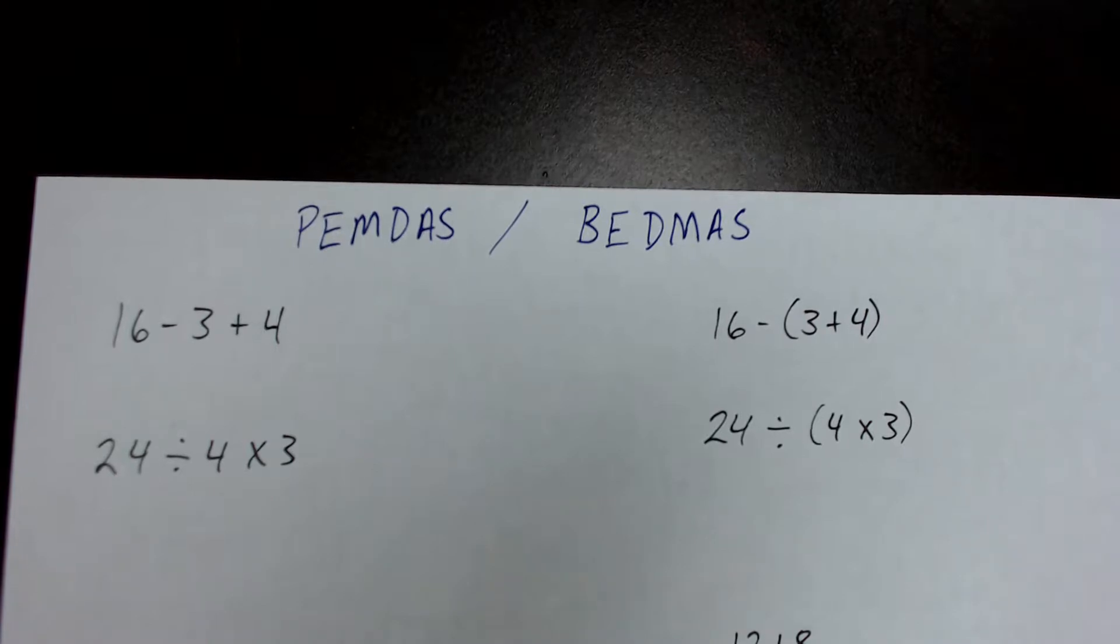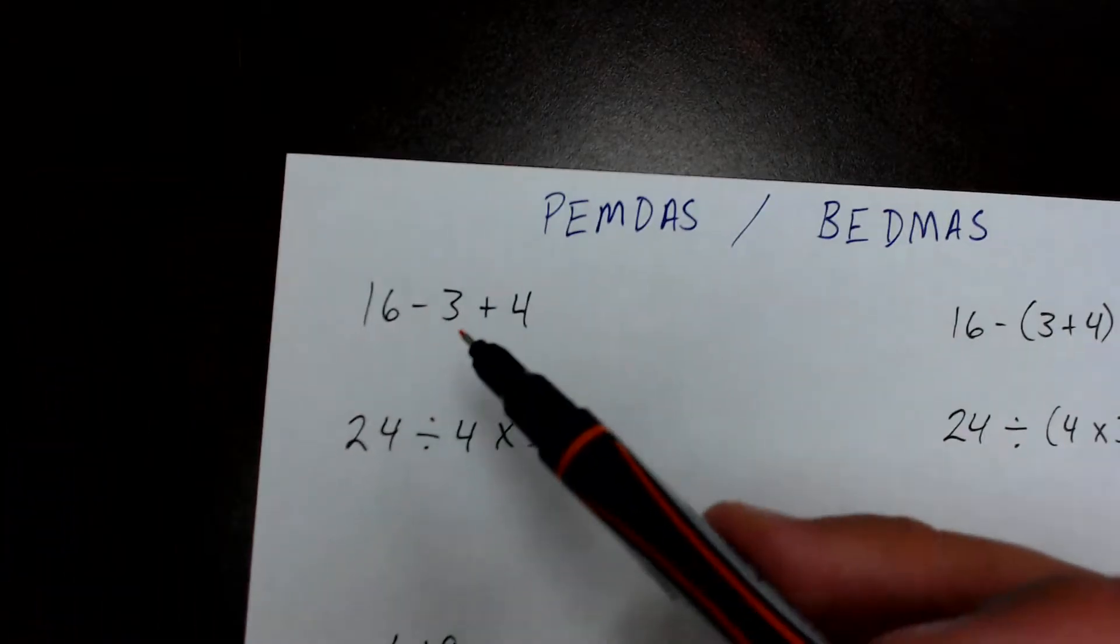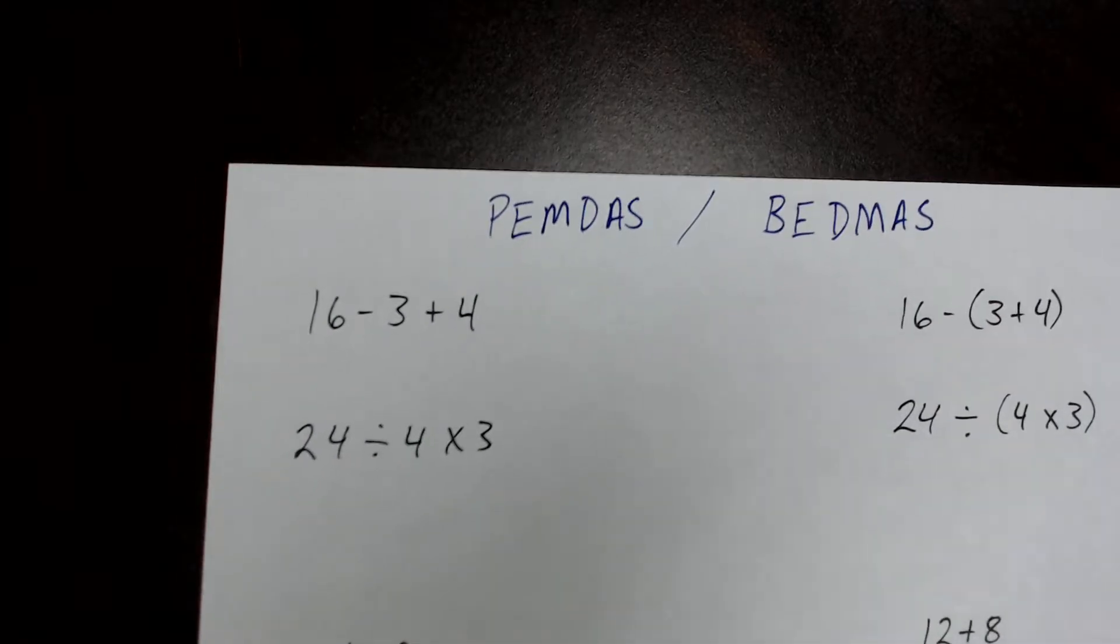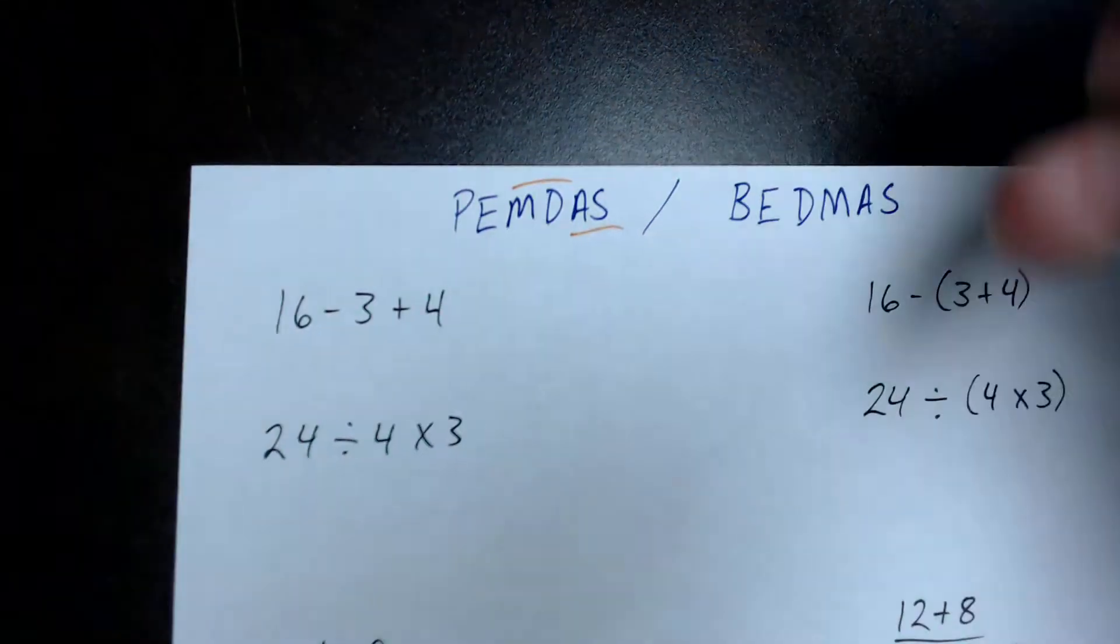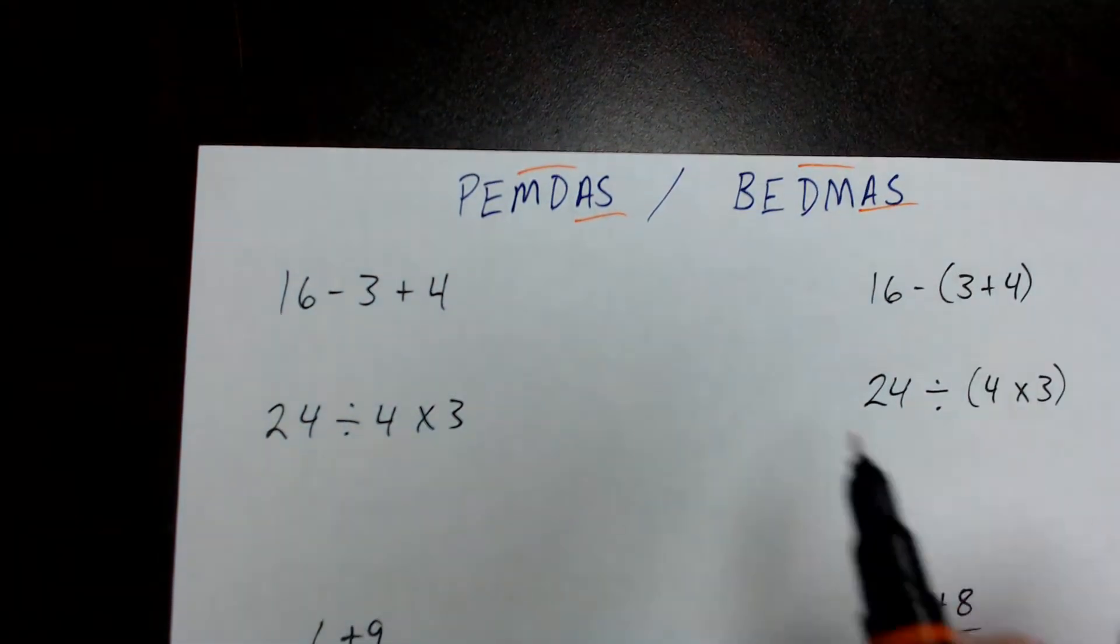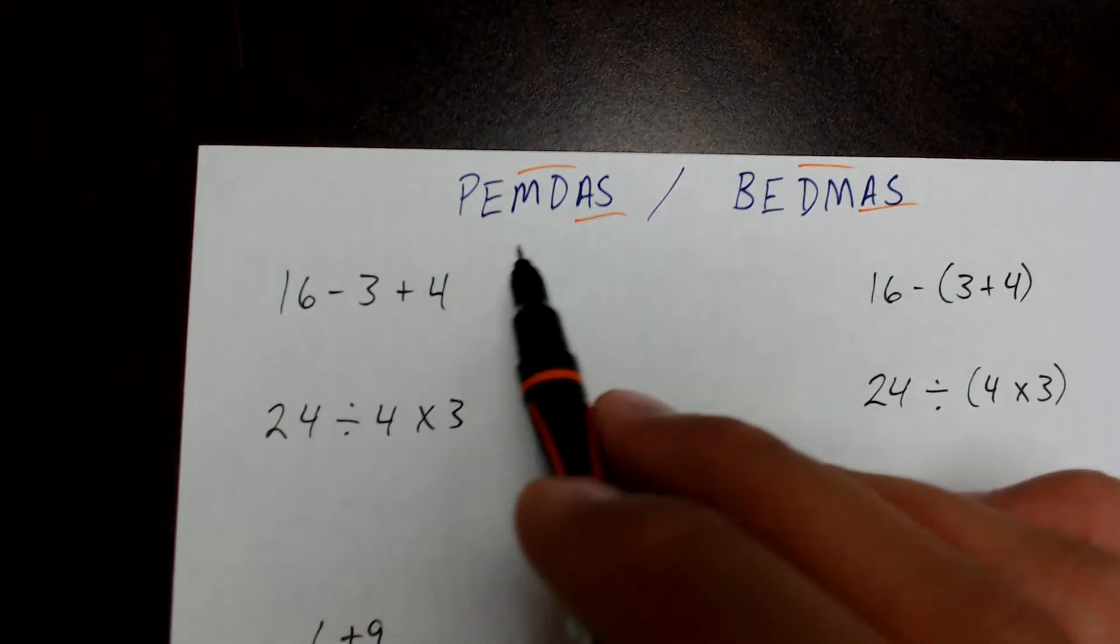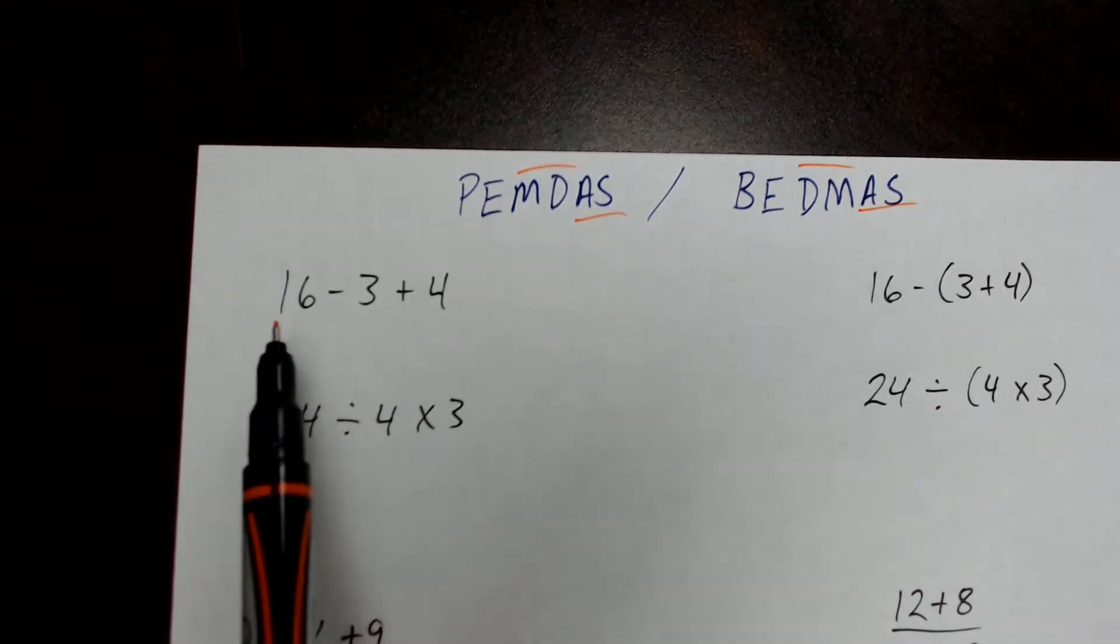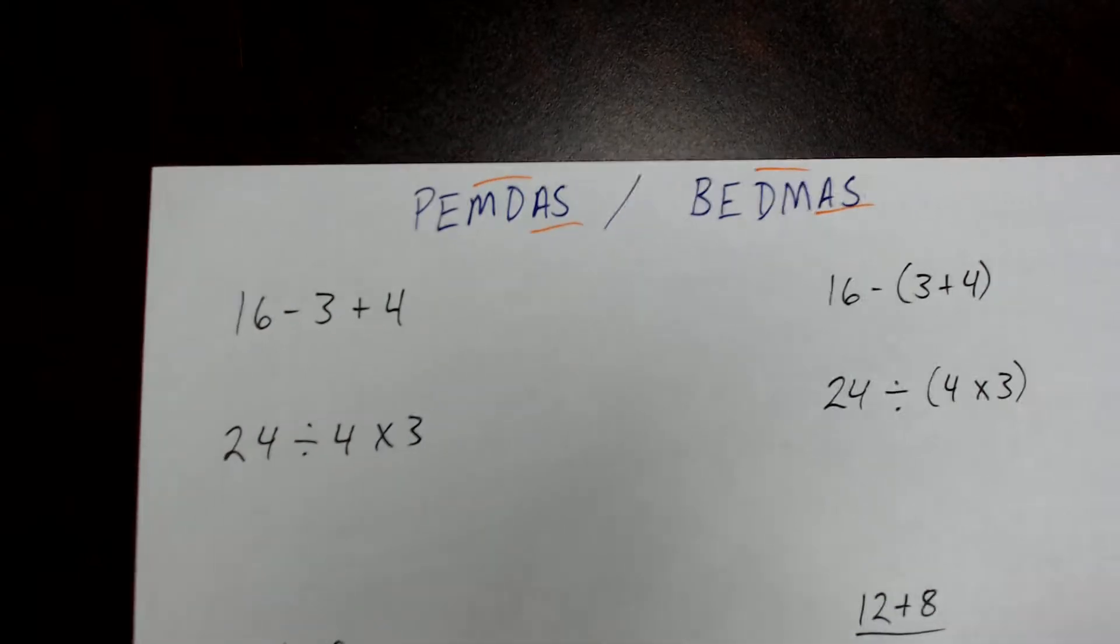All right. Anyways, so let's get started into the practice problems. Without further ado, the reason why our first two problems are grouped in addition and subtraction and multiplication and division is because there's a key rule to PEMDAS and BEDMAS, which is that multiplication and division are equals and addition and subtraction are equals. Neither one takes greater priority than the other. So whenever you run into a problem with multiple addition and subtraction problems, you simply work from left to right.